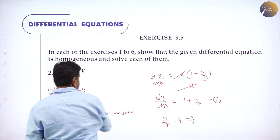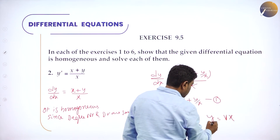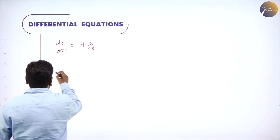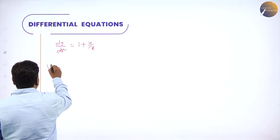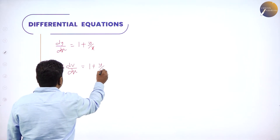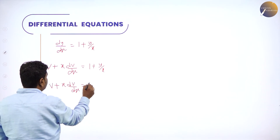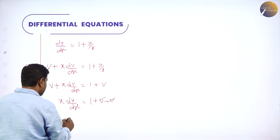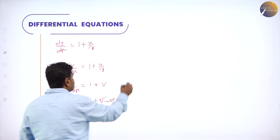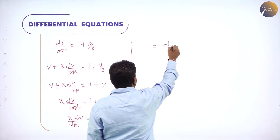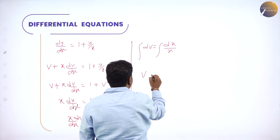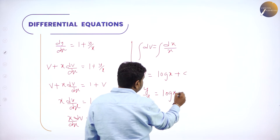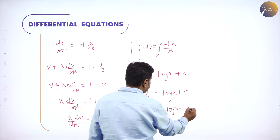Put y = vx and differentiate: dy/dx = v + x·dv/dx. Substituting into equation 1: v + x·dv/dx = 1 + v. Transfer v: x·dv/dx = 1. Separating variables: dv = dx/x. Integrate both sides: v = log x + C. Substituting v = y/x: y/x = log x + C, so y = x·log x + Cx.